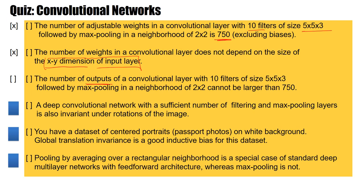Next point: a deep convolutional network with a sufficient number of filtering and max pooling layers is also invariant under rotations of the image. If you think that is correct, raise your hand now. And no, this is not correct.